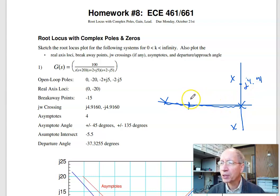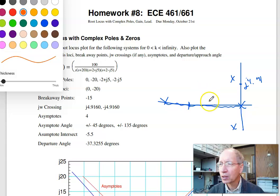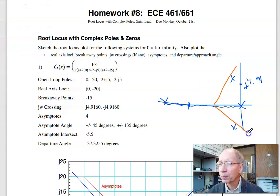I've got four asymptotes. The center of mass is at minus 5.5. It goes up at 45 degrees, minus 45, and 145 degrees, 135 degrees.